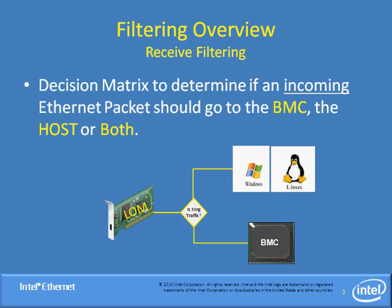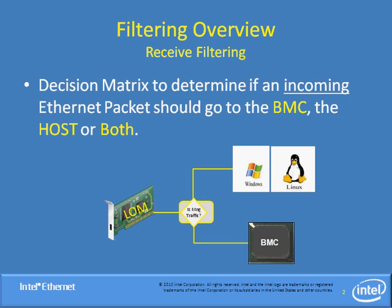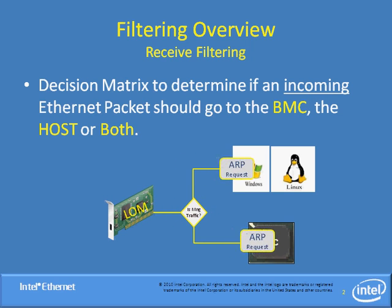Let's start with a high-level overview of how Intel Ethernet Server LOMs handle the filtering of incoming Ethernet traffic to determine if a packet should go to the BMC, the host, or both. There are configurable filters that the BMC configures, and when a packet comes in it's examined against these filters. If it matches one of the filters it's sent to the BMC; if not, it's sent to the host. Additionally, some packets can go to both places — for example, the BMC would configure ARP requests to go to both the host and the BMC.